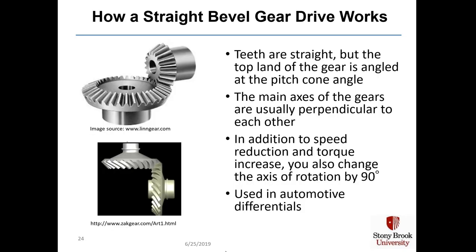Here's how a straight bevel gear drive works. In straight bevel gears, the teeth are straight but the top land is angled at the pitch cone angle, so the tooth is actually angled back. The main axes of the gears are usually perpendicular to each other — one axis goes one way, the other goes at 90 degrees in space. In addition to speed reduction and torque increase, you also change the axis of rotation by 90 degrees. Straight bevel gear drives are used in automotive differentials.